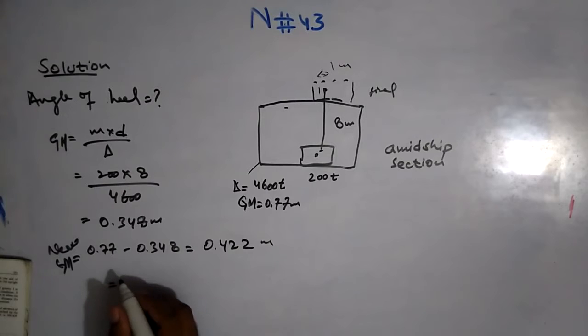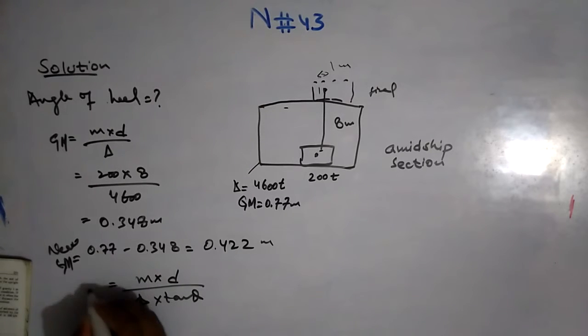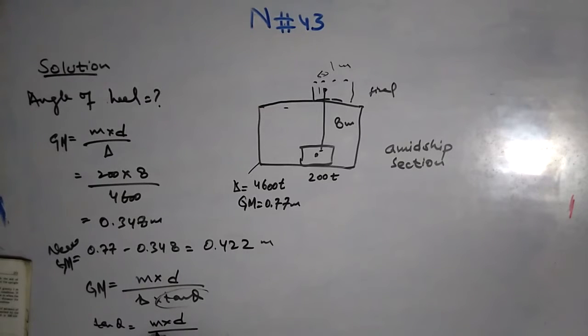This will actually make a list for the ship. M×d = Δ×tan(θ)×GM. I have to find tan(θ). M×d divided by Δ×GM, or new GM. This is new GM basically.